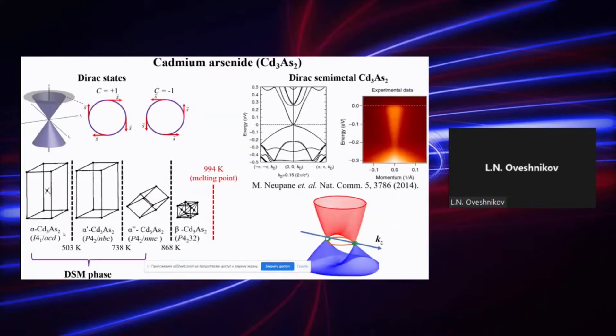Basically, this compound has been studied for several decades now and in the early stages it was considered as a simple narrow gap semiconductor. Because of that, many groups were focused on its potential applications in infrared optics. However, even in early works there were several reports on certain anomalies in this material, namely the anomalously high electron mobilities at room temperature, which was really high at that time.